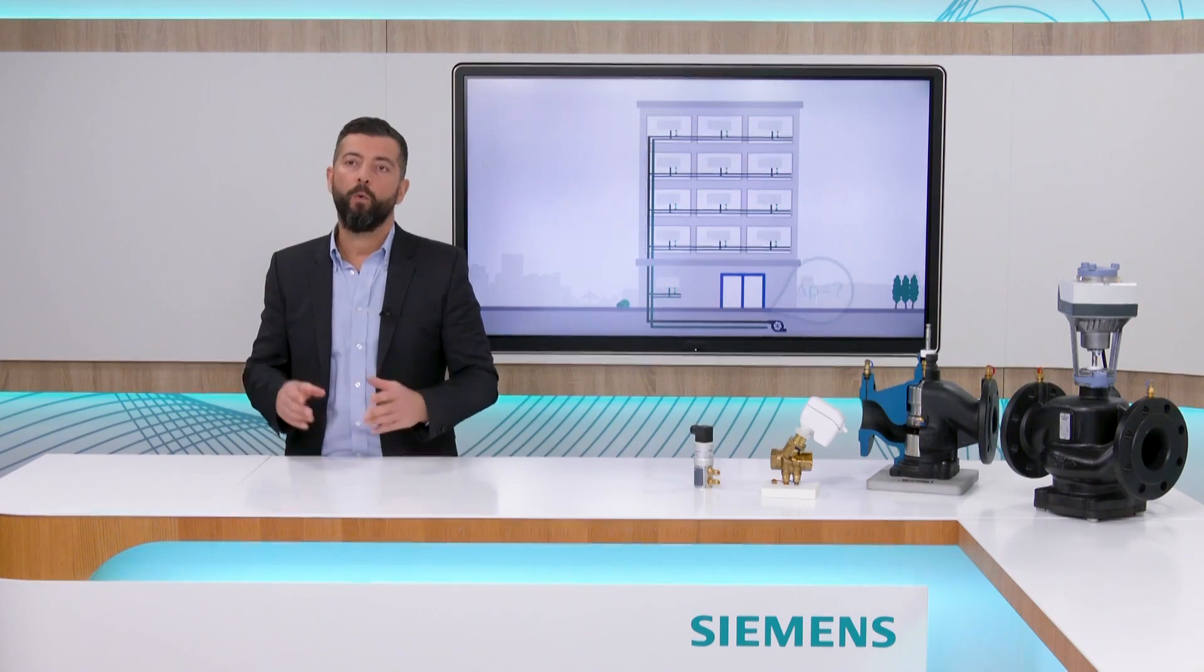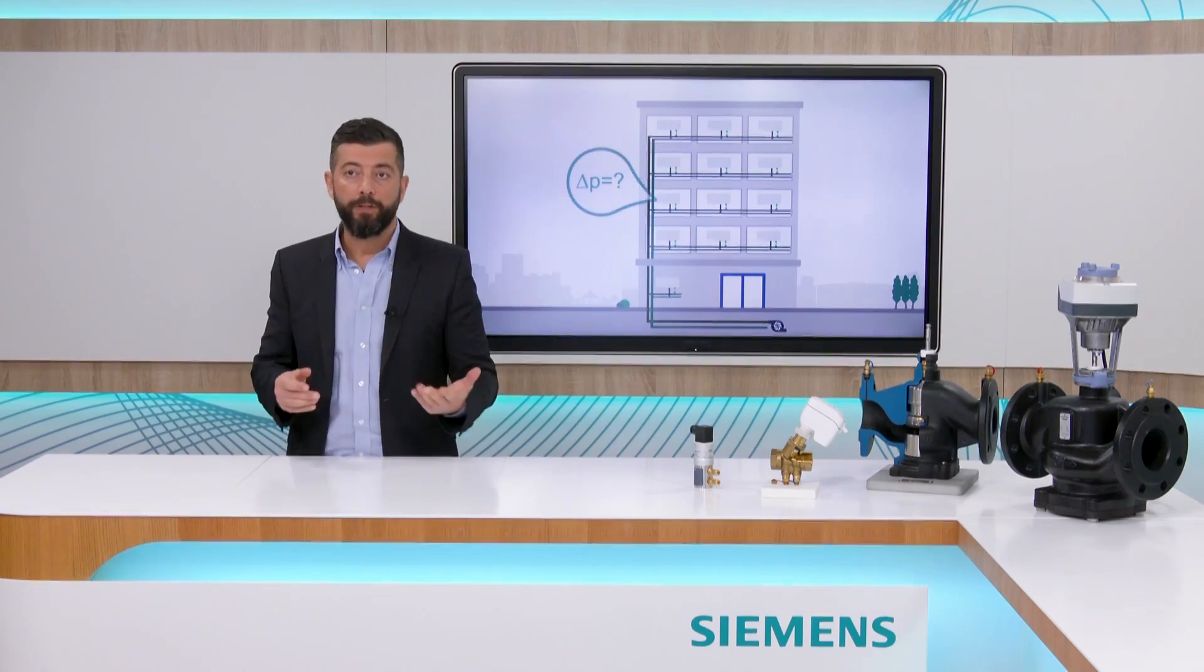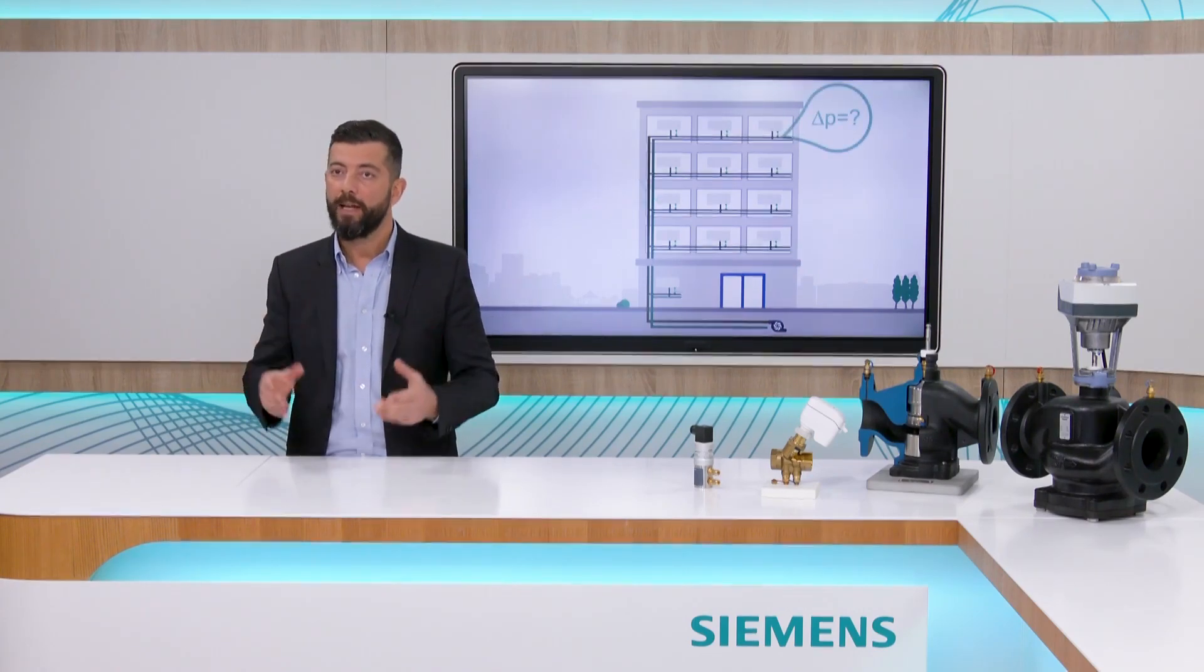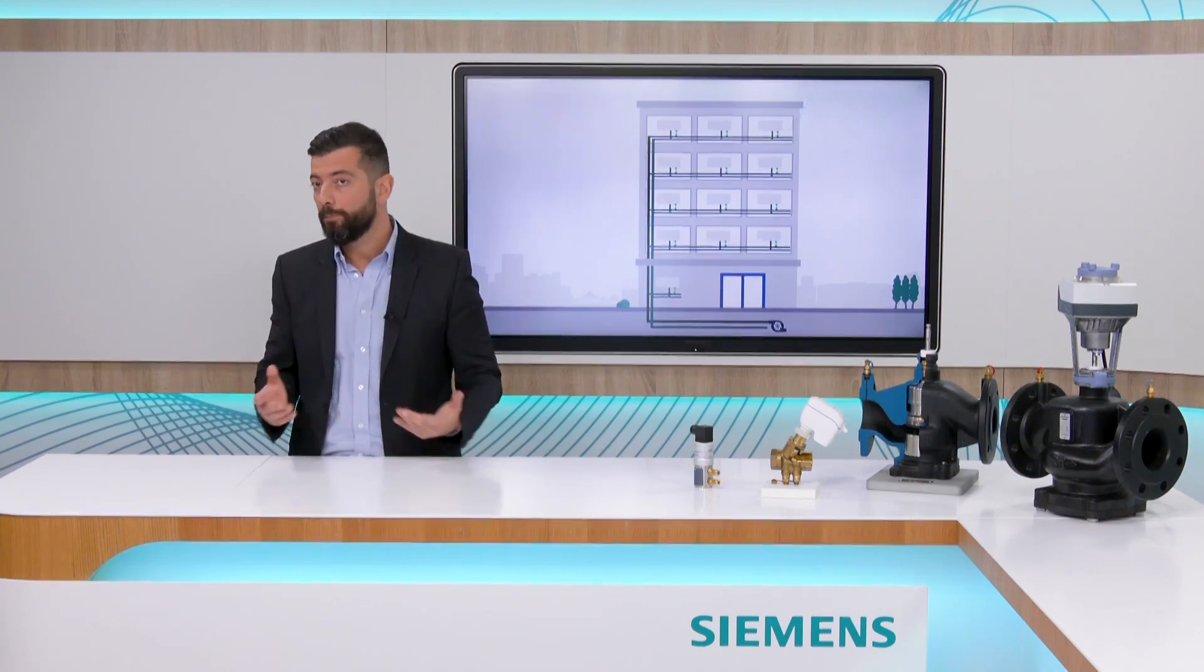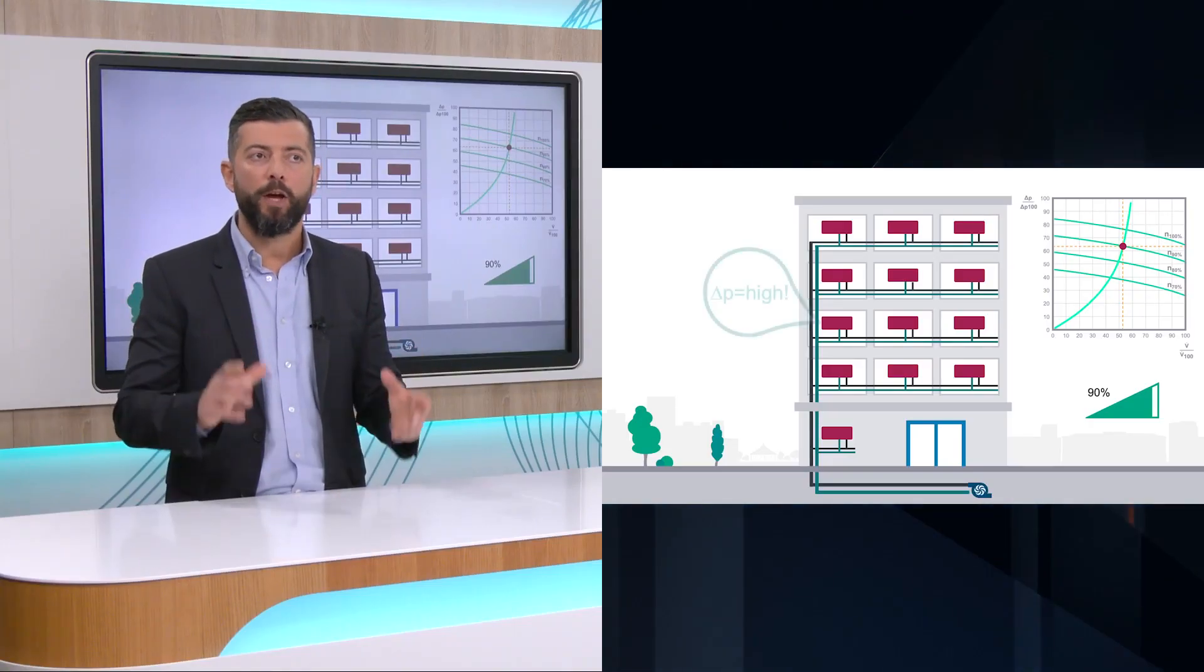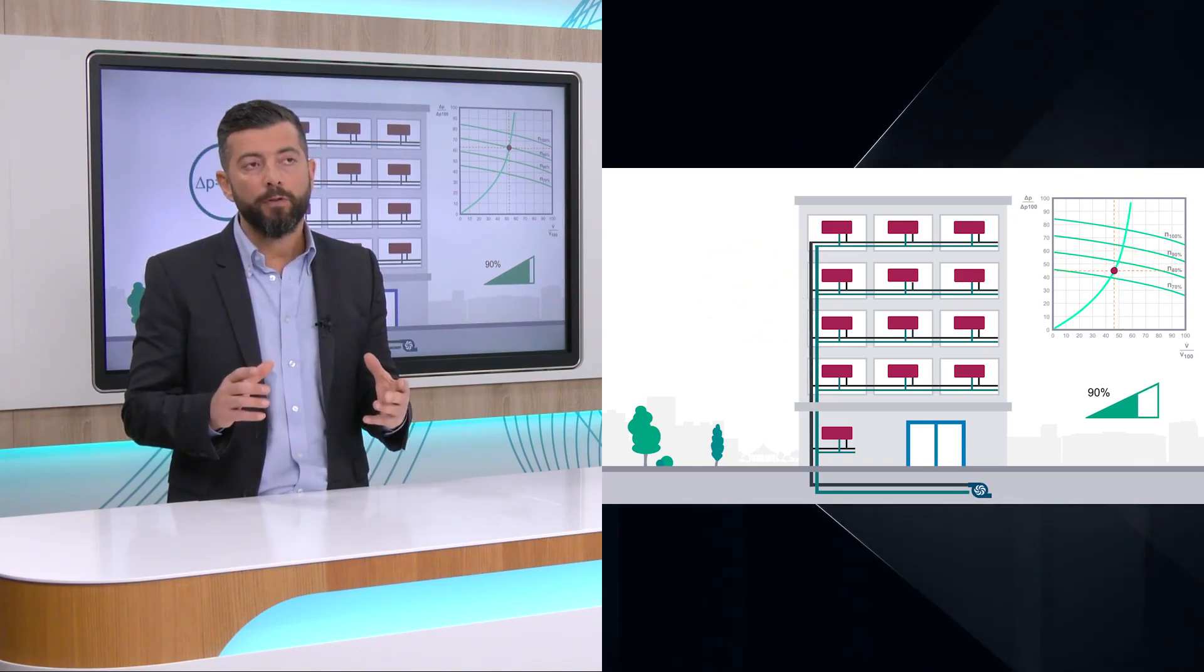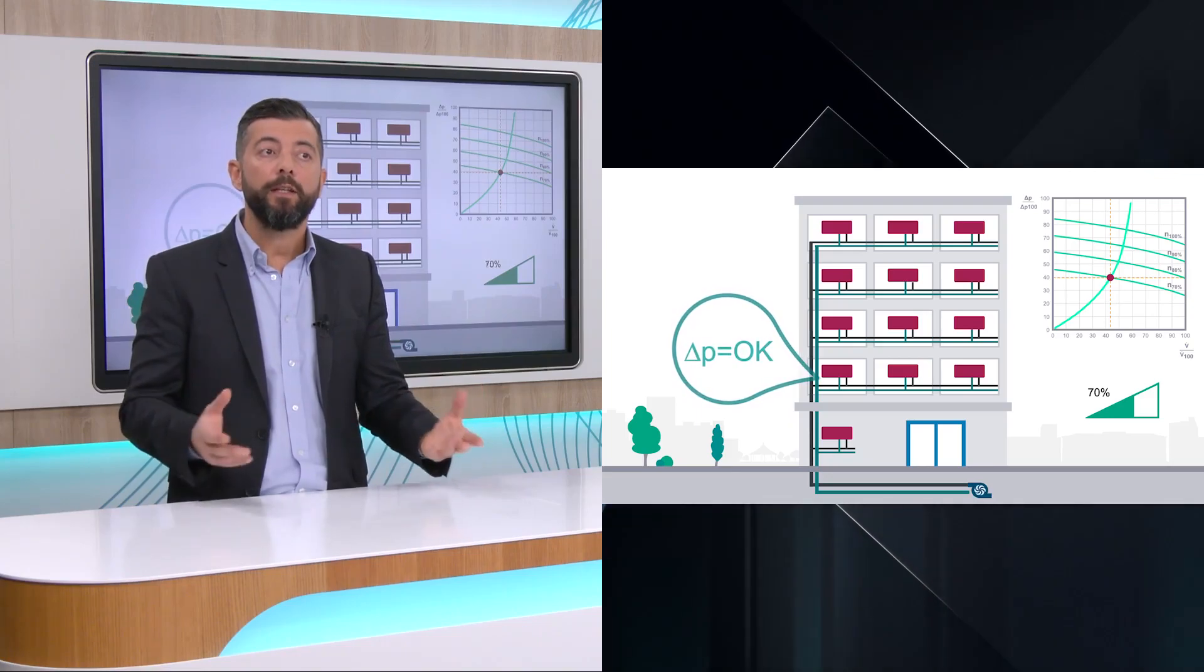In order to do this, one must check the available differential pressure delivered by the pump in different parts of the system and especially make sure there is enough pressure available at the most remote terminal units. These parts are called the index circuits. In case of too much pressure there, the pump maximum speed can be reduced and further adjustments can be made until an ideal setting is reached.